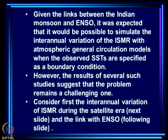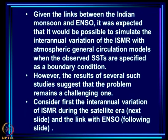The year-to-year variation of the Indian monsoon ISMR is related to ENSO. Given the links between the Indian monsoon and ENSO, it was expected that this revolution in atmospheric-oceanic sciences — being able to predict ENSO — would lead to models giving better predictions of the inter-annual variation of ISMR. However, results of several such studies suggest that the problem remains a challenging one. It is not as if solving the ENSO problem has also led to the solution of the monsoon problem; there is more to monsoon than ENSO.